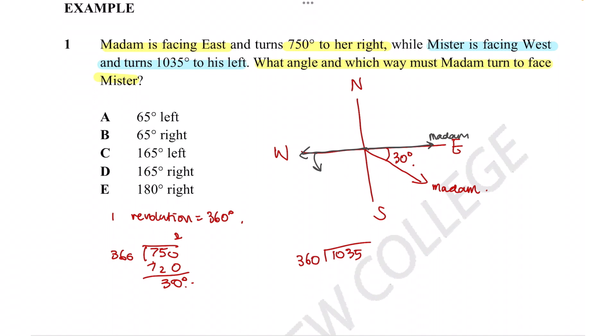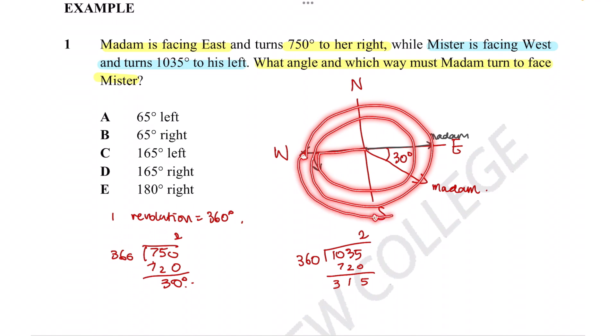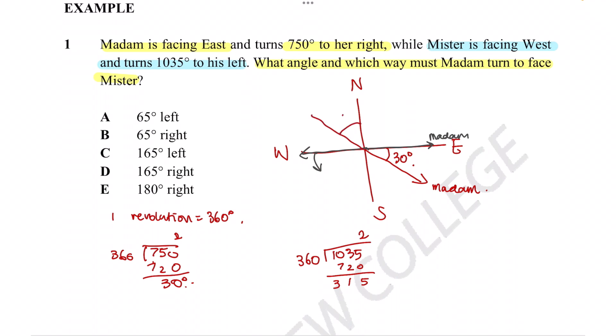360 goes into 1035 I think twice. So two times 360 is equal to 720, and the remainder is 315. So he turns from west turning left, one revolution, two revolutions, and then another 315 degrees. So this is 90, this is 180, this is 270, and this is the final 315 stretch. So the amount he's actually turned is going to equal this much, which is 45 degrees. If you're not sure where the 45 came from, that's just 315 minus 270 degrees, which is what this portion of the angle is equal to.